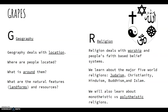G stands for geography, and geography deals with location. We ask ourselves: where are people located? What is around them? What are the natural features — landforms — and their resources? For our Egyptian unit, most civilizations are located near the Nile River, which runs through Egypt on the continent of Africa. It is in a desert. There is the Red Sea beside Egypt and some other bodies of water, and we can also look at the natural resources they trade with.